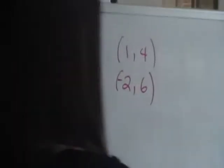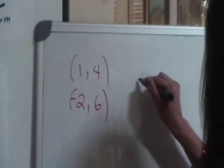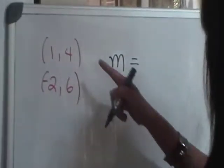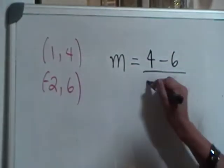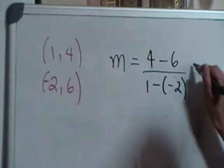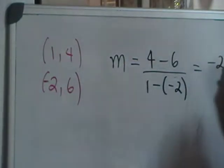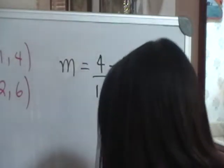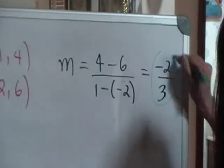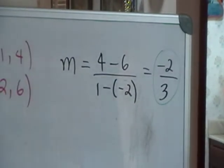So let's go to these points that I have here to calculate m. If we start with the first point, I get 4 minus 6 all over 1 minus negative 2, so that will give me negative 2 over 1 minus negative 2 is 3. So therefore now I have the green ingredient, the slope, is negative 2 thirds.